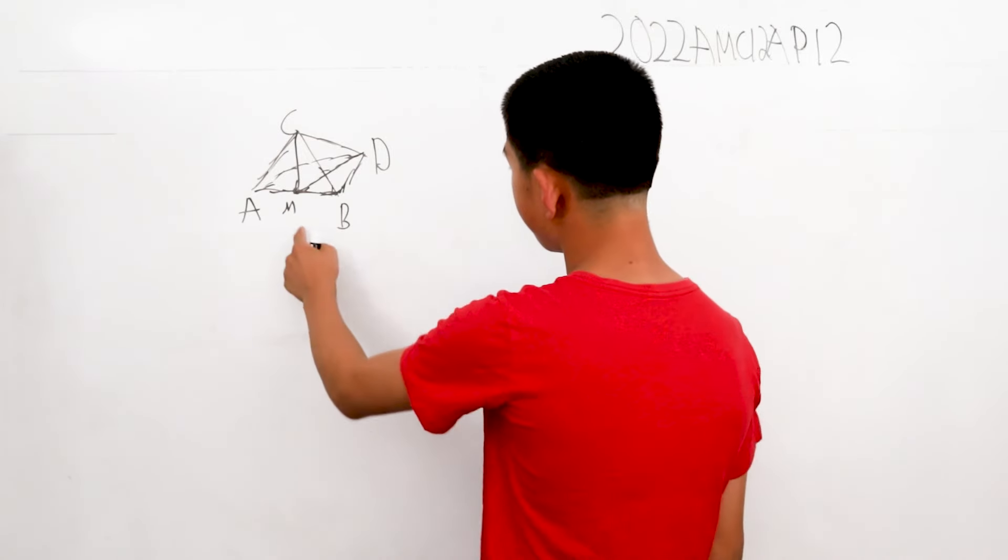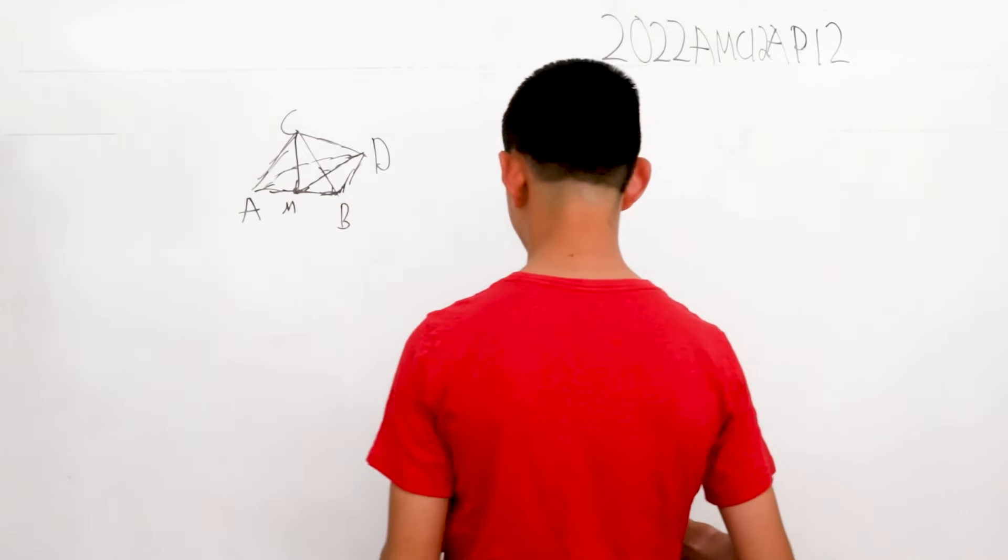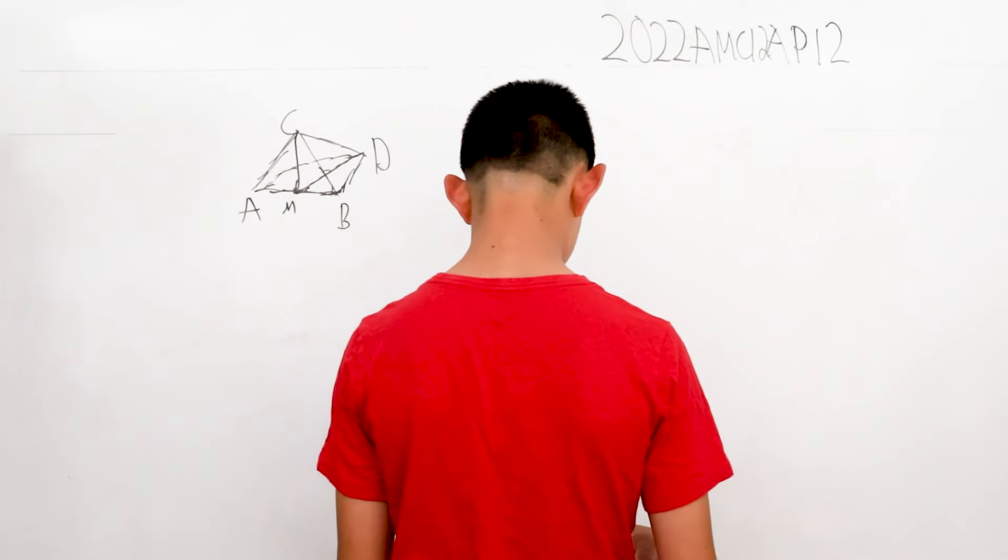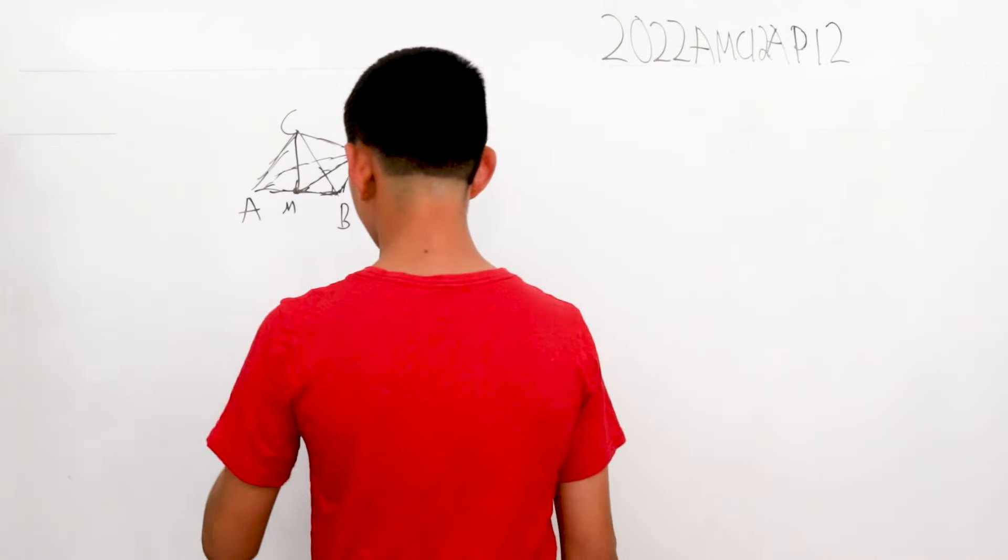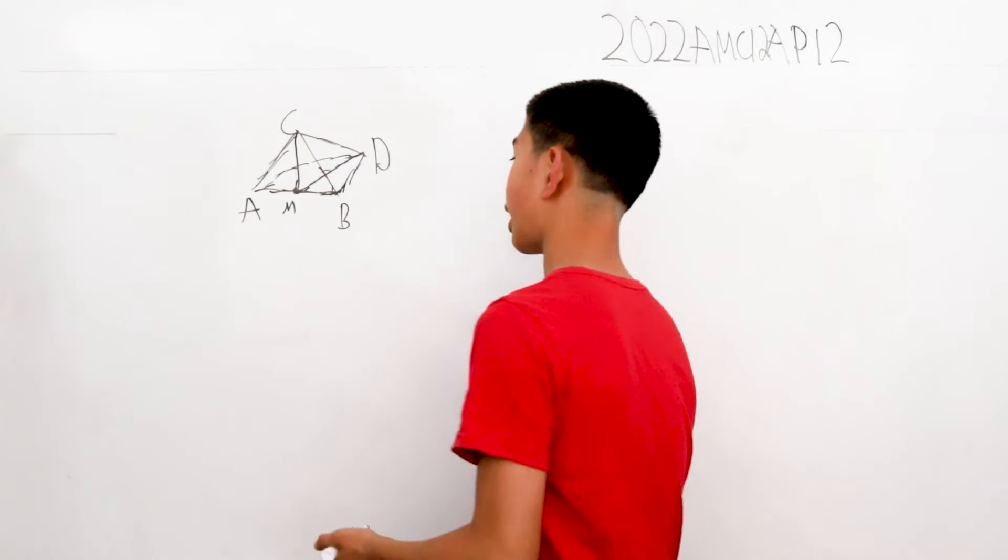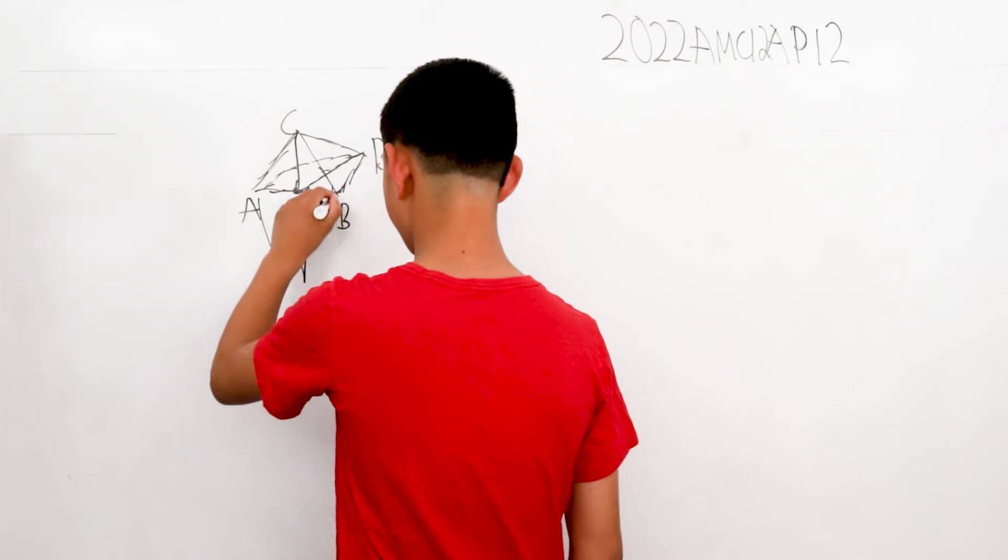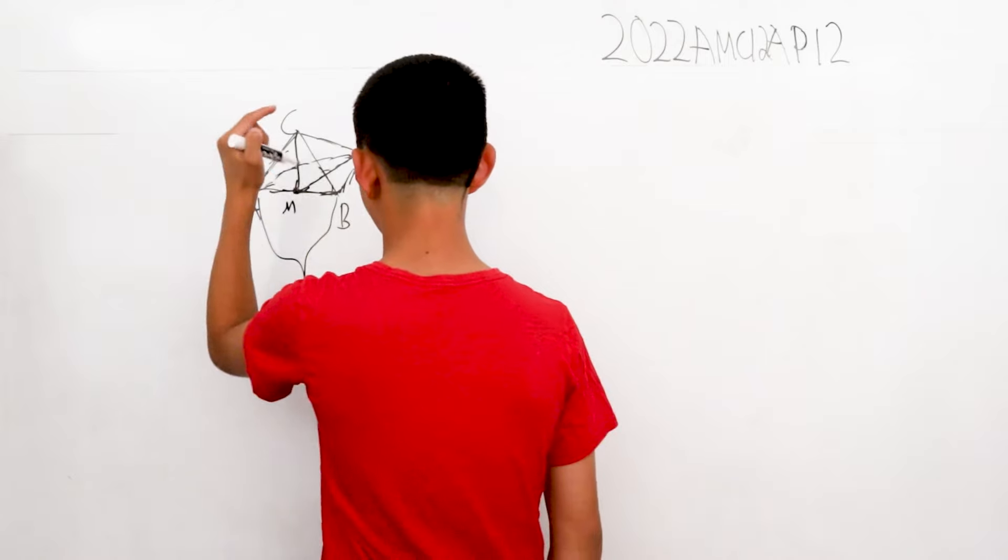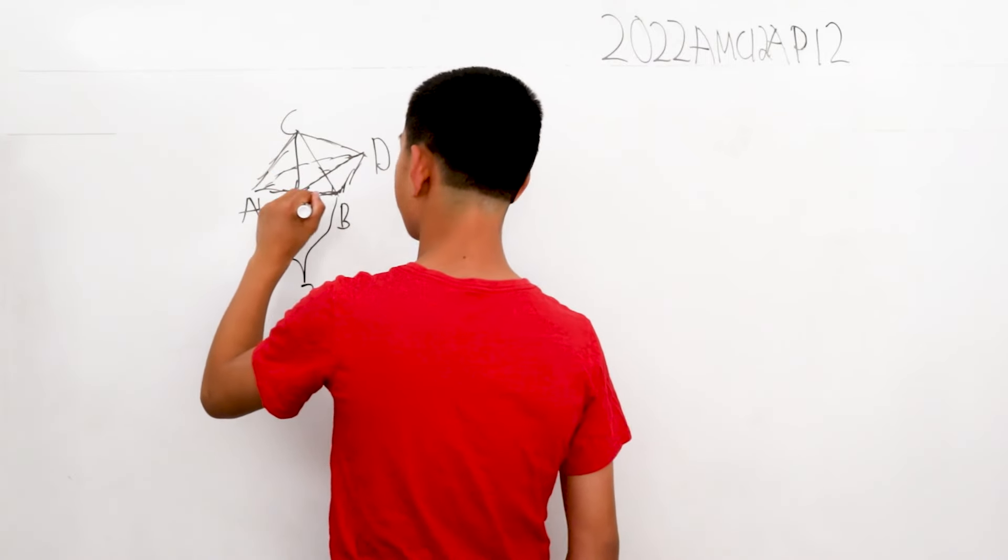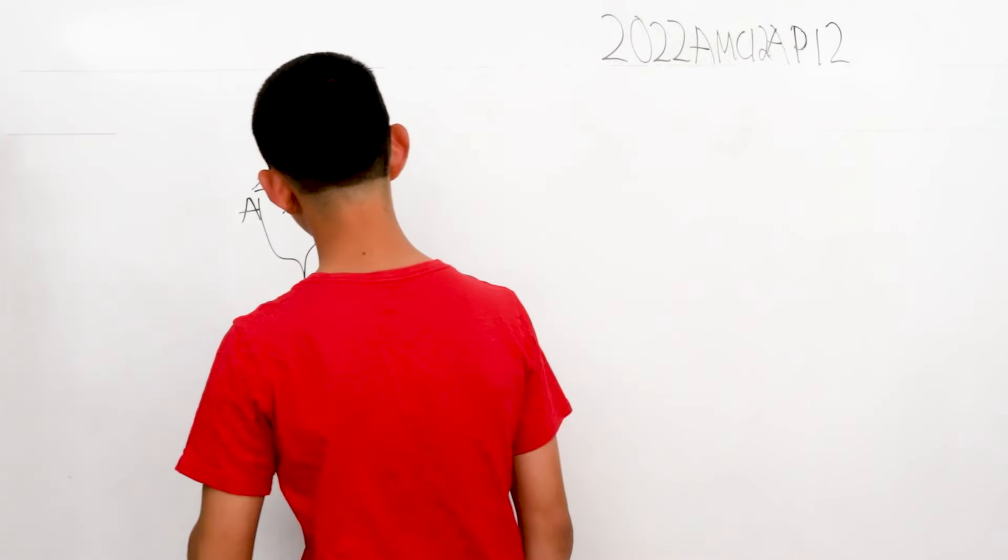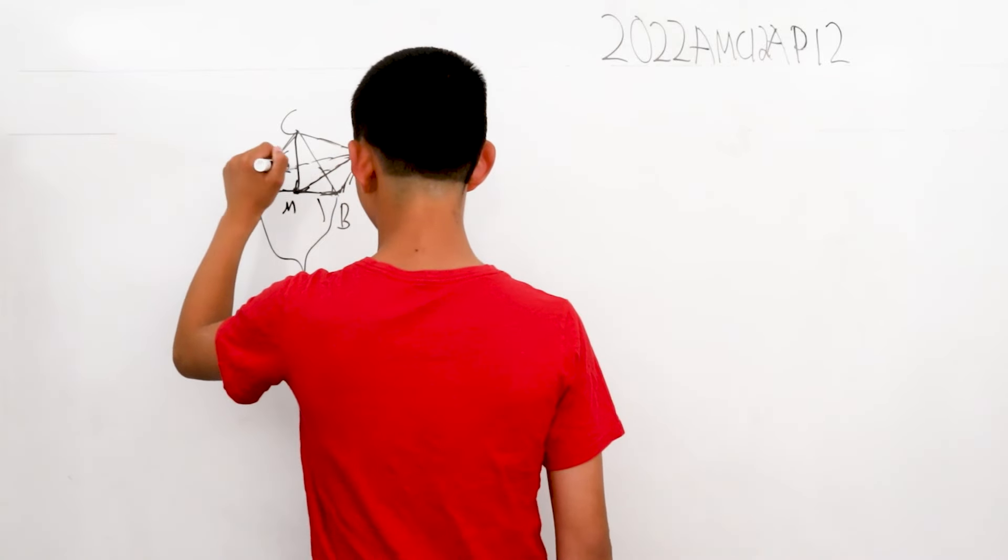So, in this case, this would be MD over CM. And now, how can we find that? Well, let's let every side be two. So, if AB is two, then MB is one. CM is two. So, the hypotenuse is the square root of three.